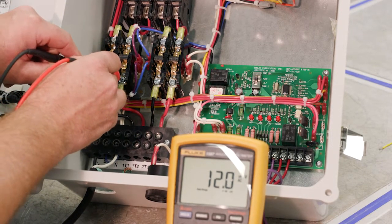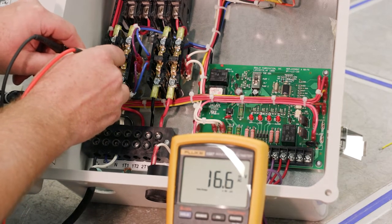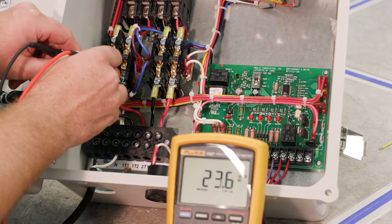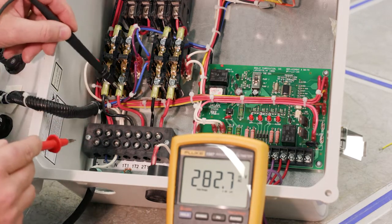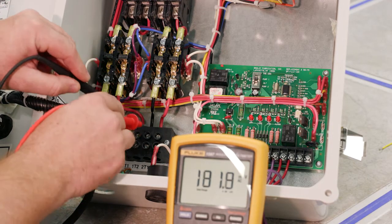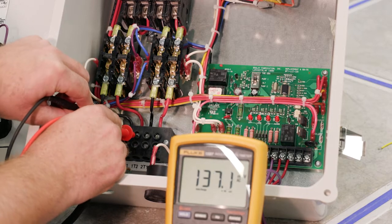When that contact closes, then we would see that same voltage go through that switch, that contact. So from there, it goes to T1 and T2. Again, right now that contact's open.